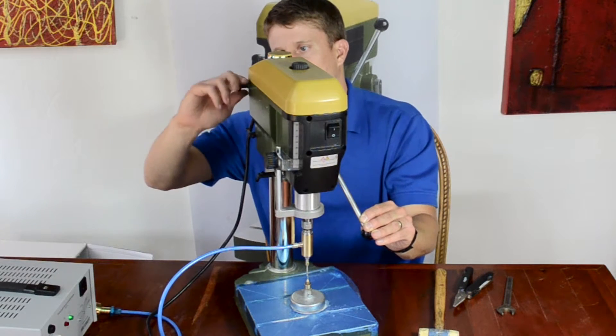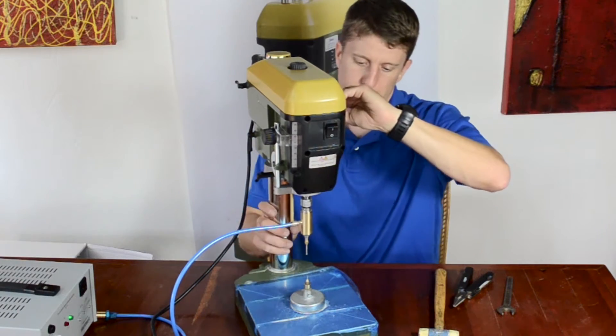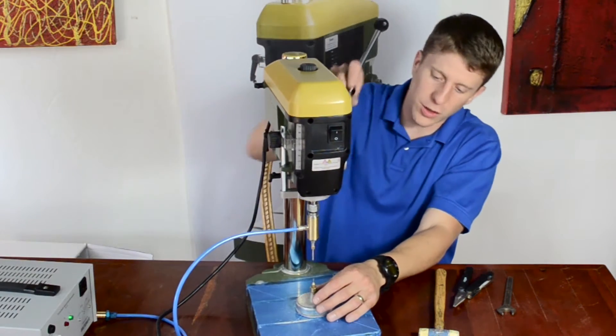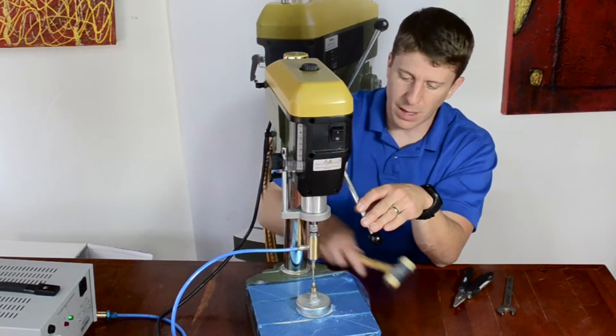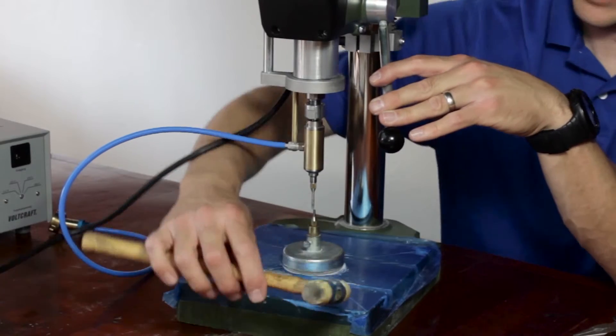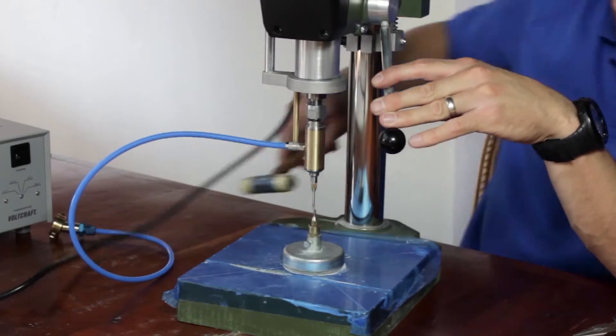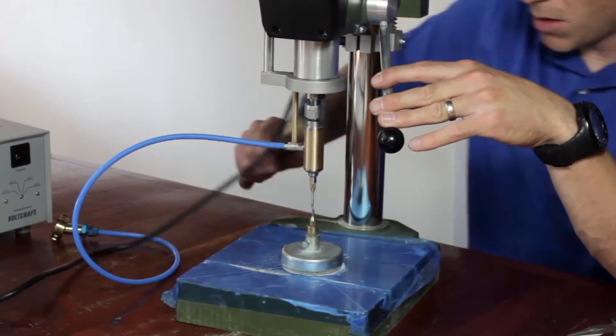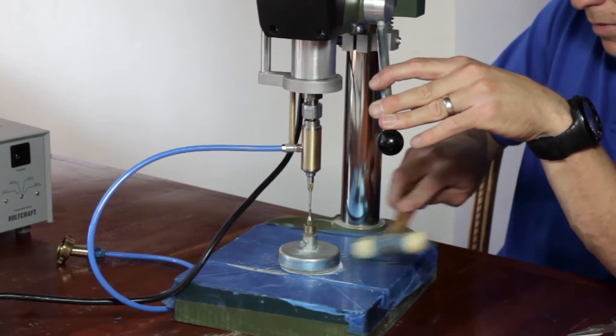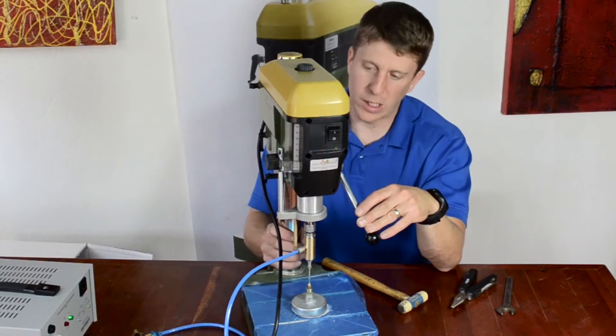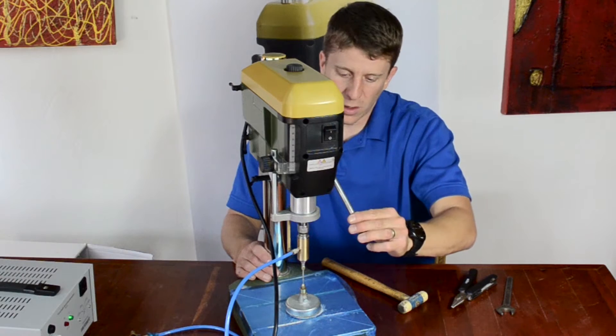And I can get to my fine adjustment. So I lower it again and I just take a plastic mallet and I just kind of tap it so that the counterpart and the drill bit are flush. Alright, that looks pretty good.